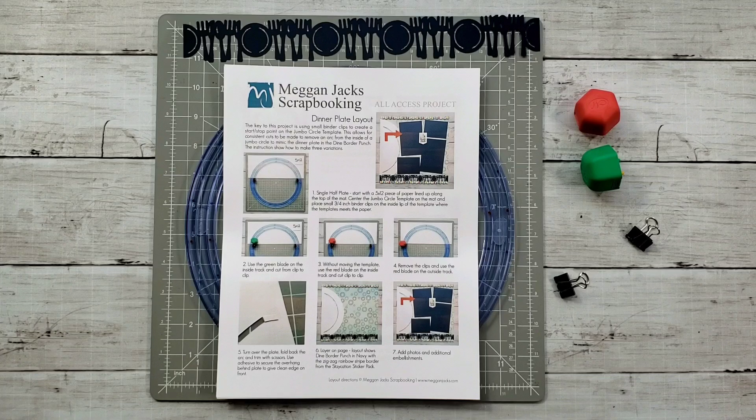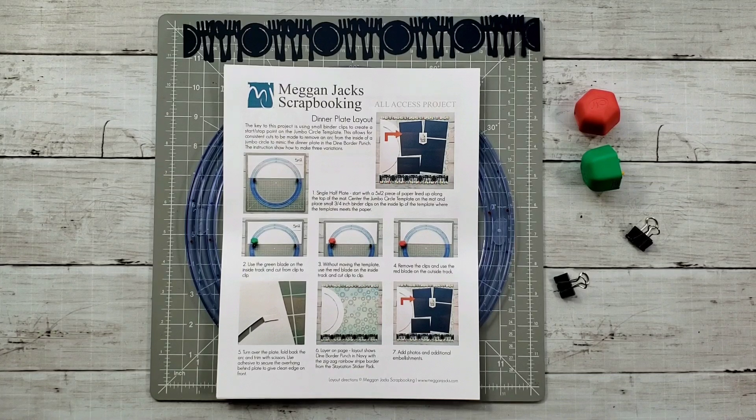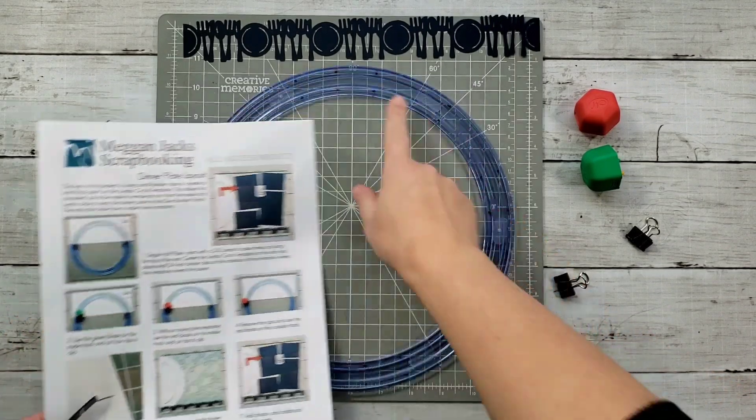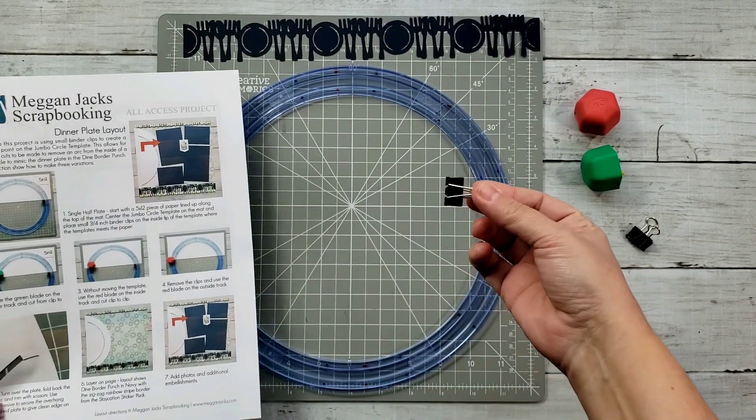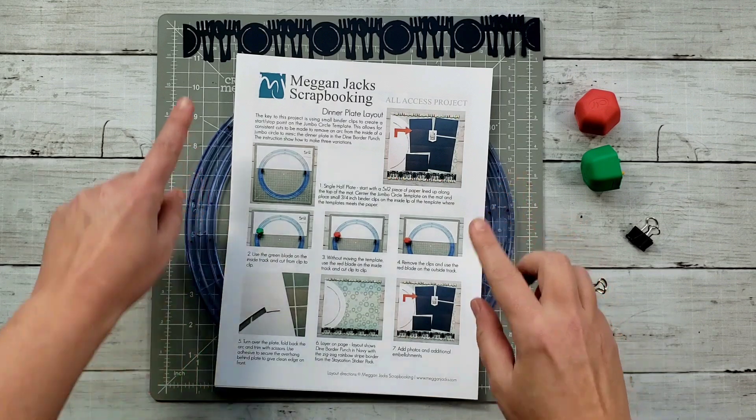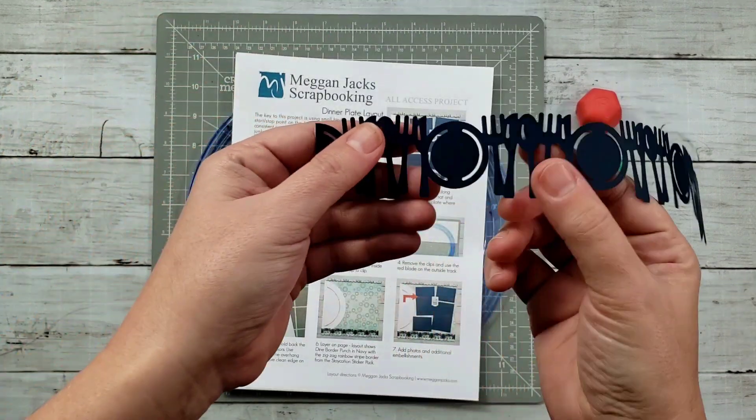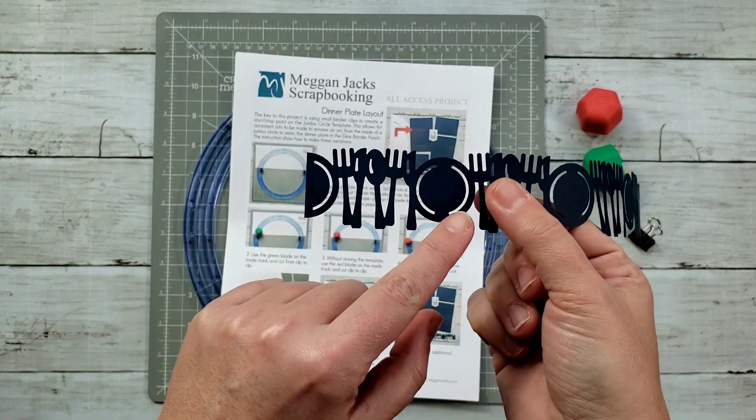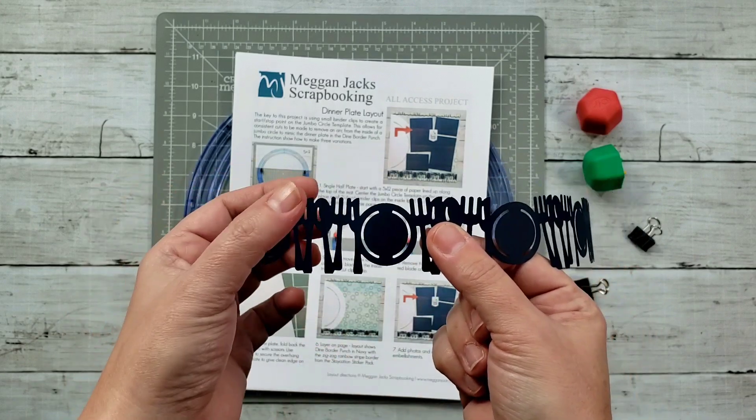Hi, this is Megan Jacks, Creative Memories Independent Advisor, and today I'm going to be showing you how to use the jumbo circle template with the binder clips in order to make a dinner plate. The dinner plate we're going to make is going to mimic the dinner plate in the Dine Border Punch from Creative Memories.